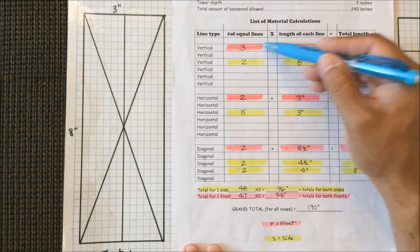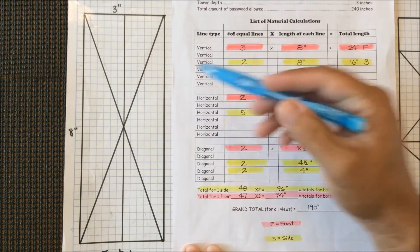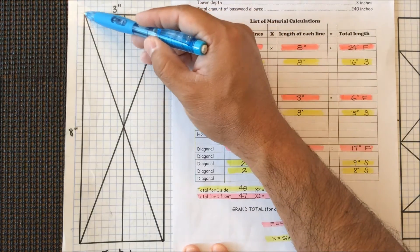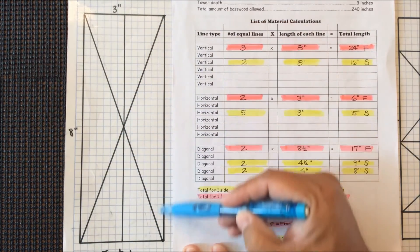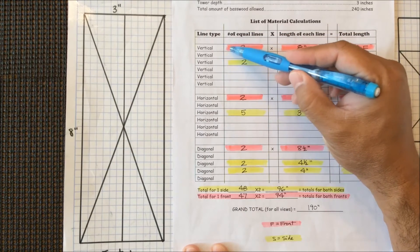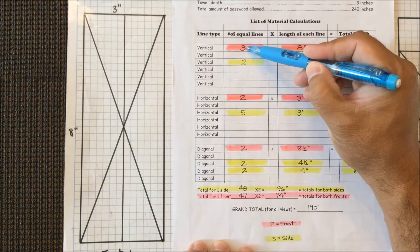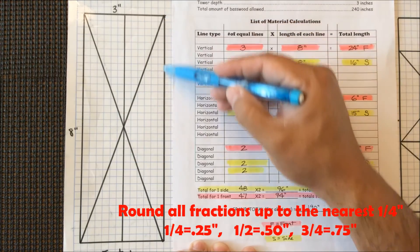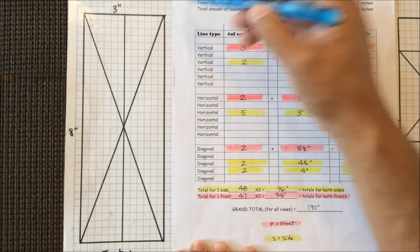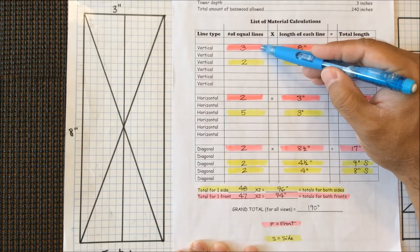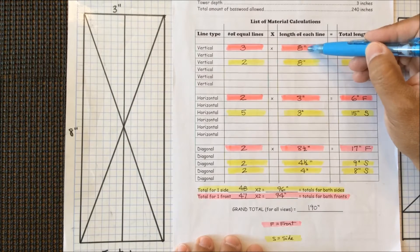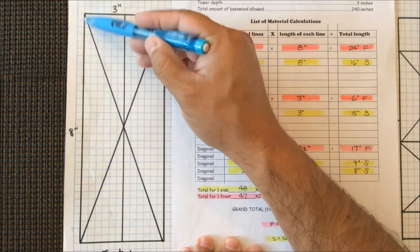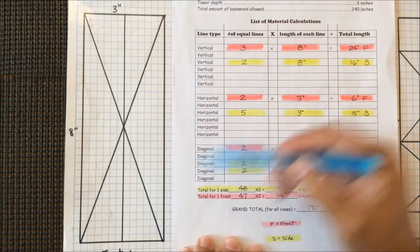What you see highlighted here in pink will be measurements for the front view. Starting with vertical lines under line type, I take a look at this design and I can already tell I have three vertical lines — one, two, three. These three lines are the same length, so under number of equal lines, I put a three. I multiply three times the length of each line, which measures to eight inches. So three times eight gives me 24 inches total, and I put an F after it for a front view. I know it takes 24 inches of balsa wood to construct those three lines.